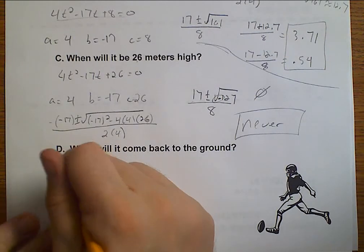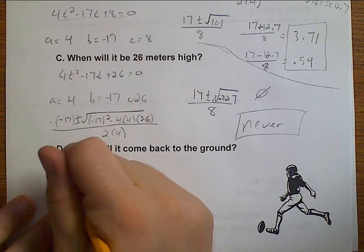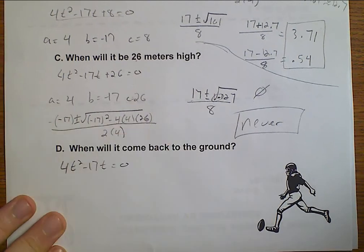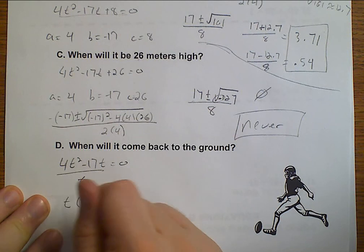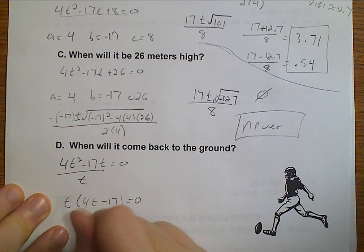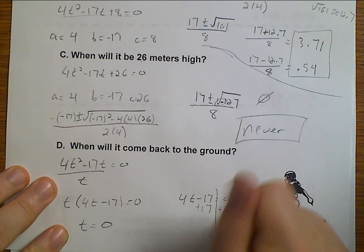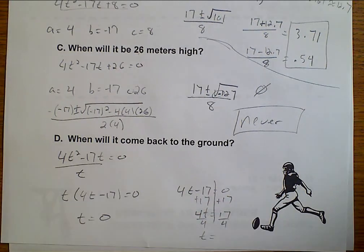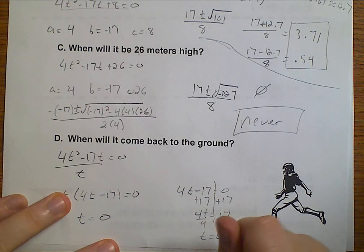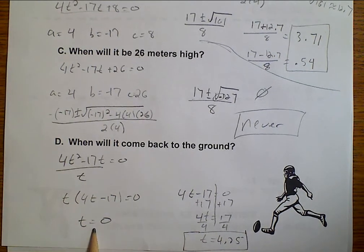Alright, well, when does it come back to the ground? Well, that would be 4t squared minus 17t equals 0. I can divide everything by t. So, I have t and 4t minus 17 equals 0. So, t equals 0 and 4t minus 17 equals 0. If I add 17, I get that 4t equals 17, divide by 4, and I get that t equals 4.25. And we know that this is when the ball was kicked. So, this must be when the ball lands.